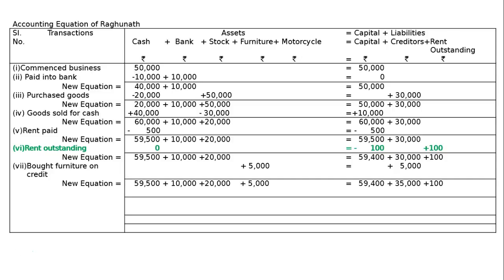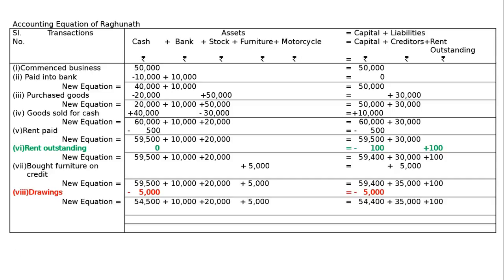Eighth transaction: bought refrigerator for personal use. Private use is treated as drawings — we have to minus from both cash and capital Rs. 5,000 each. We then get the new equation.